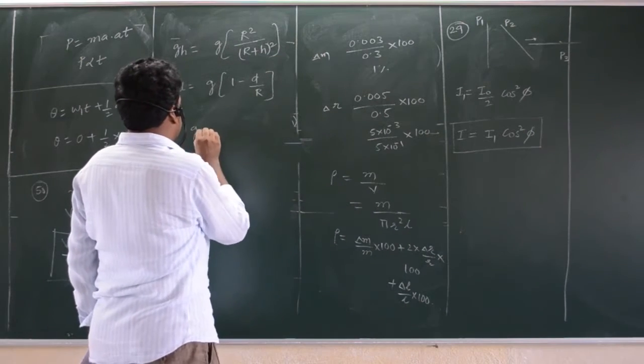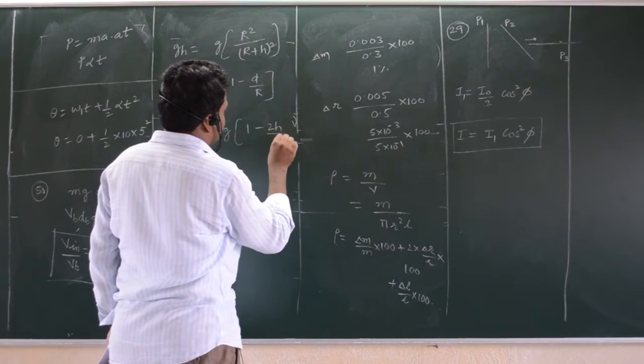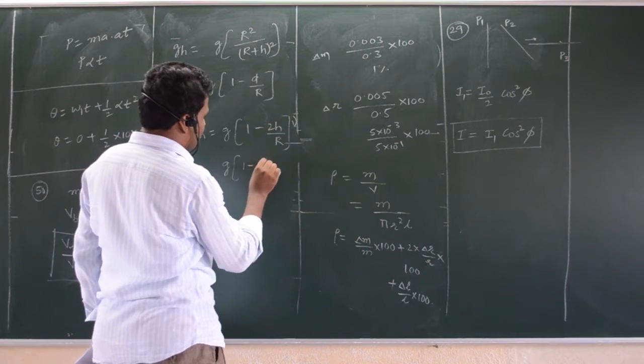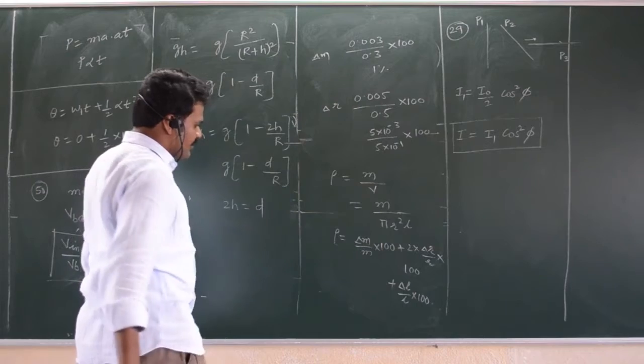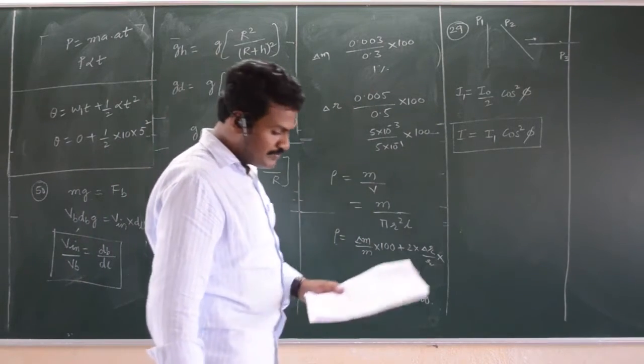This g h, you can write g into 1 minus 2 h by r, if h is very small. So, when both are equal means g into 1 minus d by r, this 2 must be equal means 2 h must be equal to d. 2 h must be equal to d means 20 km. That will be the answer.